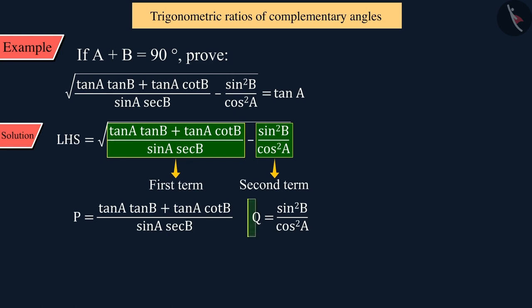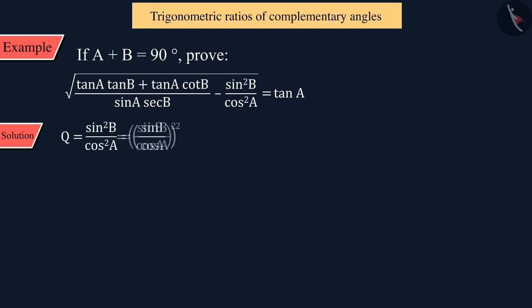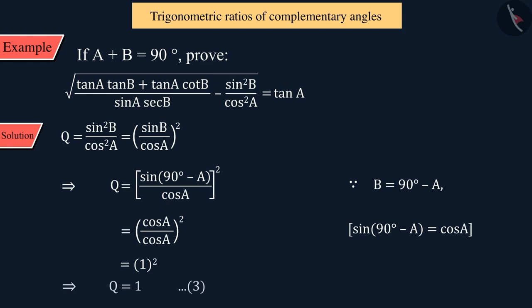Similarly, if we talk about the second term Q, we can write it in the same way. Here, we change sin B to cos A. Solving that, we get the value Q. We can express this as equation 3.